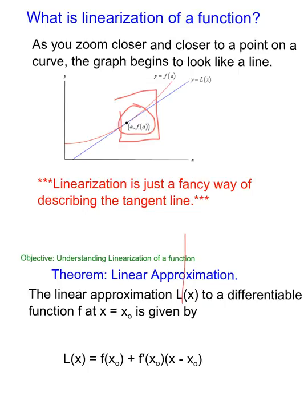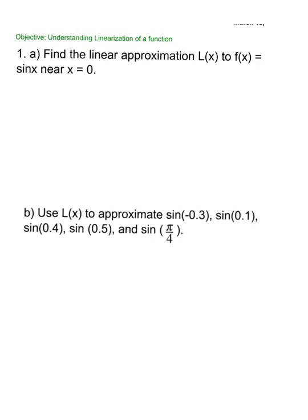So the theorem of linear approximation is literally just the equation of a tangent line — it's just fancy looking. y equals f(x₀) plus f'(x₀) times (x minus x₀). They just moved the y₀ from the left side over to the right, and they're giving it the name L(x) so that it has a function name.